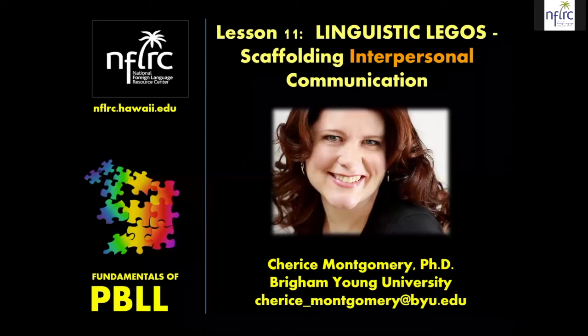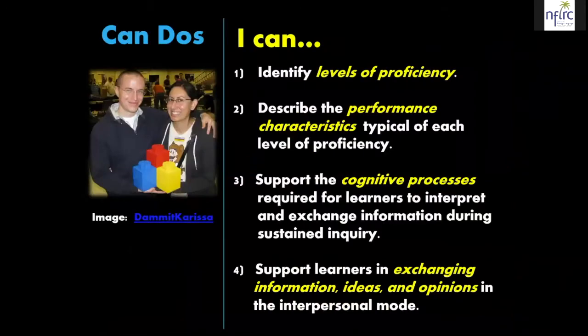For this next section, we're going to be talking about how we help learners to talk about the texts that they have been exposed to. We're going to be thinking about different levels of proficiency, the performance characteristics typical of each level, how we might support the cognitive processes that learners need to use in order to interpret and exchange information, and how we support learners in exchanging that information.